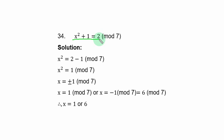We can also collect like terms and take square root. So if we collect like terms by transferring plus 1 to the right hand side, we are left with x squared equal to 2 minus 1 modulo 7. So we have x squared equal to 1.